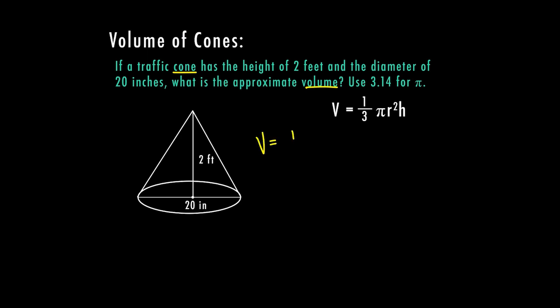So volume equals one third, pi is 3.14. Now my radius, my radius is going to be half the distance of the diameter. So if the diameter is 20 inches, my radius is 10 inches squared. And then my height here is two feet. Now I have a little bit of a problem because if one's in feet and one's in inches, I can't just compare those. So I have to change my feet to inches, which is 24 inches. So now I can put 24 into my problem and solve.